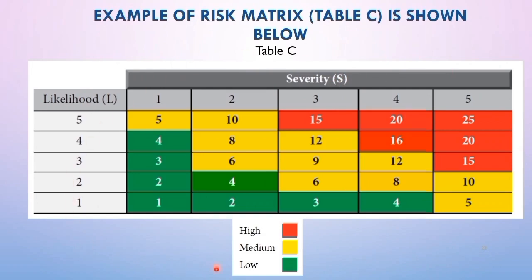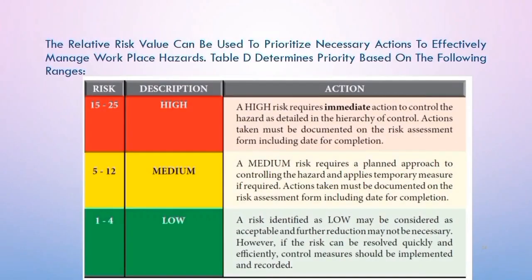This is the risk matrix table. To use it, identify the severity column first, then the likelihood column. Based on this risk matrix, there are three levels of risk: low, medium, and high categories, classified by colour — green for low, yellow for medium, and red for high. If the risk value falls from 1 to 4, it falls under low risk, which is considered acceptable — the risk can be resolved quickly and efficiently, but all control measures must still be documented.